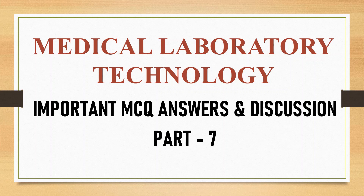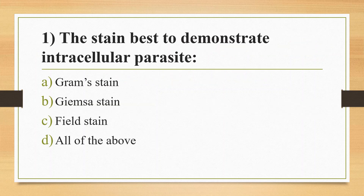First question: The stain best to demonstrate intracellular parasites. Option A: Gram stain. Option B: Jamesa stain. Option C: Field stain. Option D: All of the above. Answer is Option B, Jamesa stain.